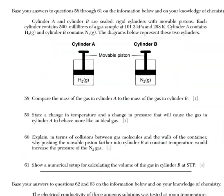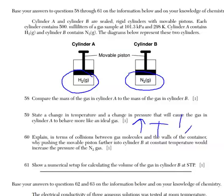Okay, for this next group of questions, we have two gases. We have hydrogen and nitrogen, and each cylinder has the same volume. We're talking 500 milliliters for both. We're talking the same pressure, 101.3 kilopascals and the same temperature. And we're asked in 58, compare the mass of the gas in cylinder A to the mass of the gas in cylinder B because all the conditions for the gas are the same. So the number of particles will be equal, but their masses are not the same. So nitrogen gas is heavier than hydrogen, or you could have said that hydrogen gas is lighter than nitrogen for 58. Then in 59, it says stated change in temperature and a change in pressure that will cause the gas in cylinder A to behave more like an ideal gas. This goes for any gas. If I raise the temperature and I lower the pressure, then any gas will behave more like an ideal gas for 59.